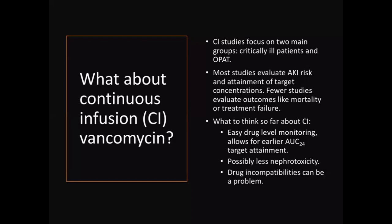Regarding continuous infusion vancomycin: if you are giving vancomycin by continuous infusion, it is easy to calculate the area under the curve — it is simply 24 times whatever the steady-state concentration is. In theory the concentration is a straight line, so you get that number and multiply by 24 for your AUC. There are pros and cons of continuous infusion vancomycin as a broader topic, but in terms of calculating AUC it is a straightforward method.